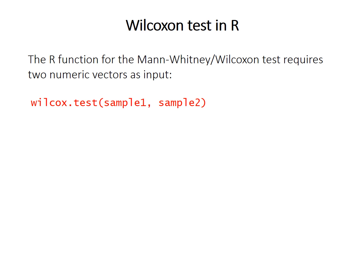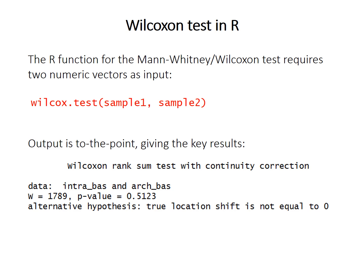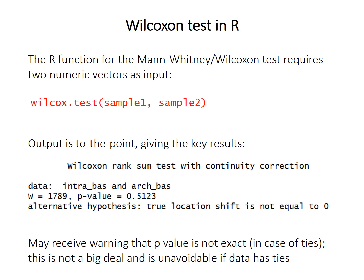In R, the function is called wilcox.test — it still performs a Mann-Whitney U-test since they're just two names for the same thing. It requires two numeric vectors as input, often the result of subset functions run previously. The output is brief but gives all the details you need: the W statistic, the p-value, and the alternative hypothesis. You may receive a warning that the p-value is not exact in the case of ties, but this isn't a big deal unless you have many duplicated values, and it's unavoidable — you just have to ignore this warning if you get one.